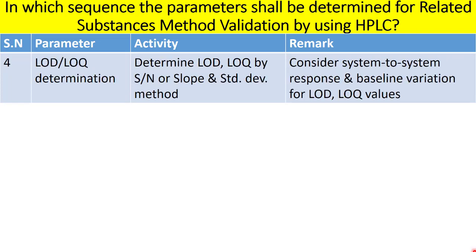As part of related substances validation, you also have to determine the limit of detection (LOD) and limit of quantification (LOQ). The LOQ is required for determining accuracy and linearity. You cannot perform linearity and accuracy before knowing the LOQ. You can determine LOD and LOQ by the signal-to-noise ratio method or by the slope and standard deviation method.